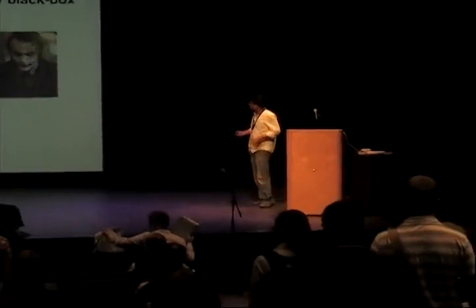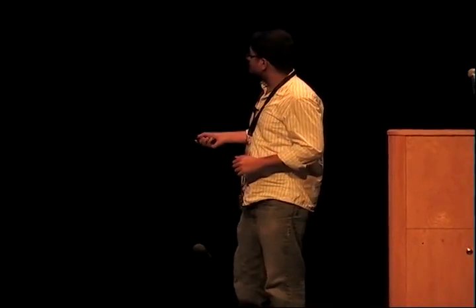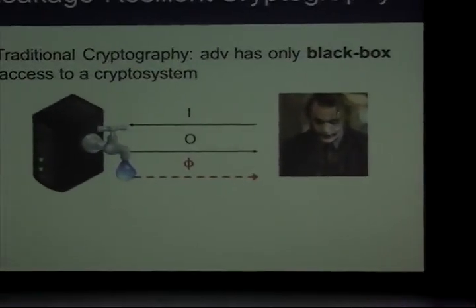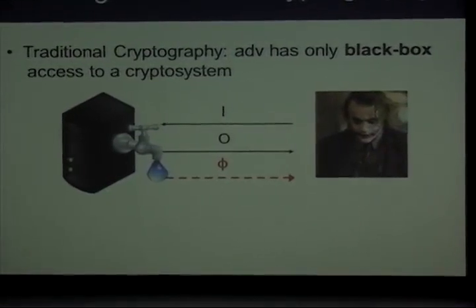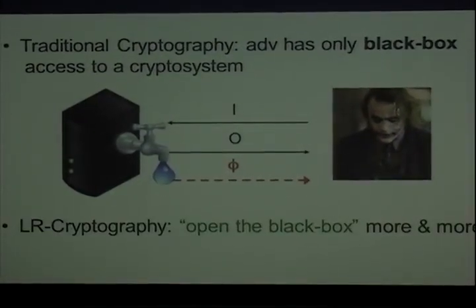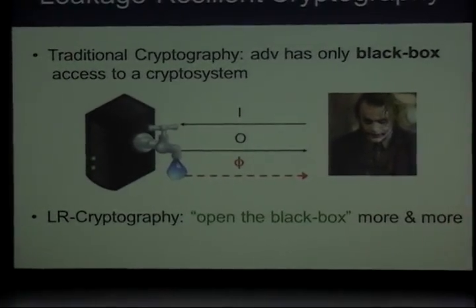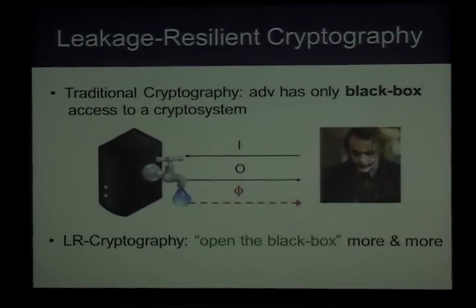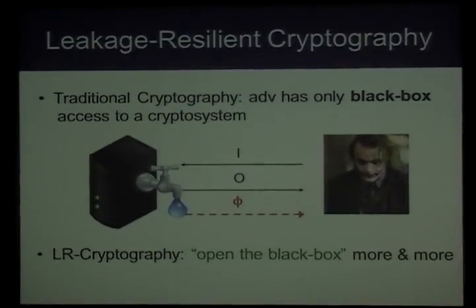Traditionally when we talk of cryptography, we allow the adversary access to devices in a well-specified input-output behavior. But as it turns out, this is not always the case. An adversary can potentially, in certain cases, obtain additional information about the secret possessed by a cryptographic system, which could ultimately lead to the total collapse of the security of the system.